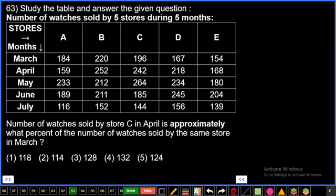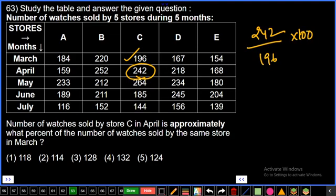Question number 63: Number of watches sold by store C in April is approximately what percent of number of watches sold by the same store in March? Store C in April is 242, in March is 196. So 242 is how much percent of 196? 196 plus 46 is 242. If 196 is 100 percent, then 46 is approximately 25 percent, so it's between 23-24 percent. So it is 100 plus 24 percent, which is 124 percent approximately. Fifth option.